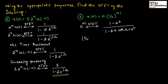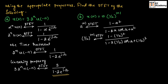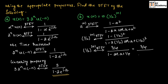Therefore, for (1/2) to the power of magnitude of n, if we perform DTFT, we will obtain 1 minus (1/2) whole squared divided by 1 minus 2 into (1/2) cos omega plus (1/2) squared. This simplifies to 3/4 divided by 1 minus cos omega plus 1/4, which can be written as 3/4 divided by 5/4 minus cos omega.